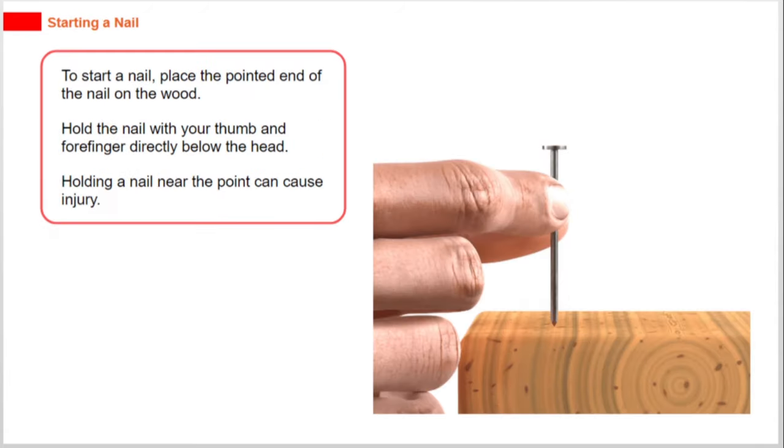To start a nail, place the pointed end of the nail on the wood. Hold the nail with your thumb and forefinger directly below the head. Holding a nail near the point can cause injury.